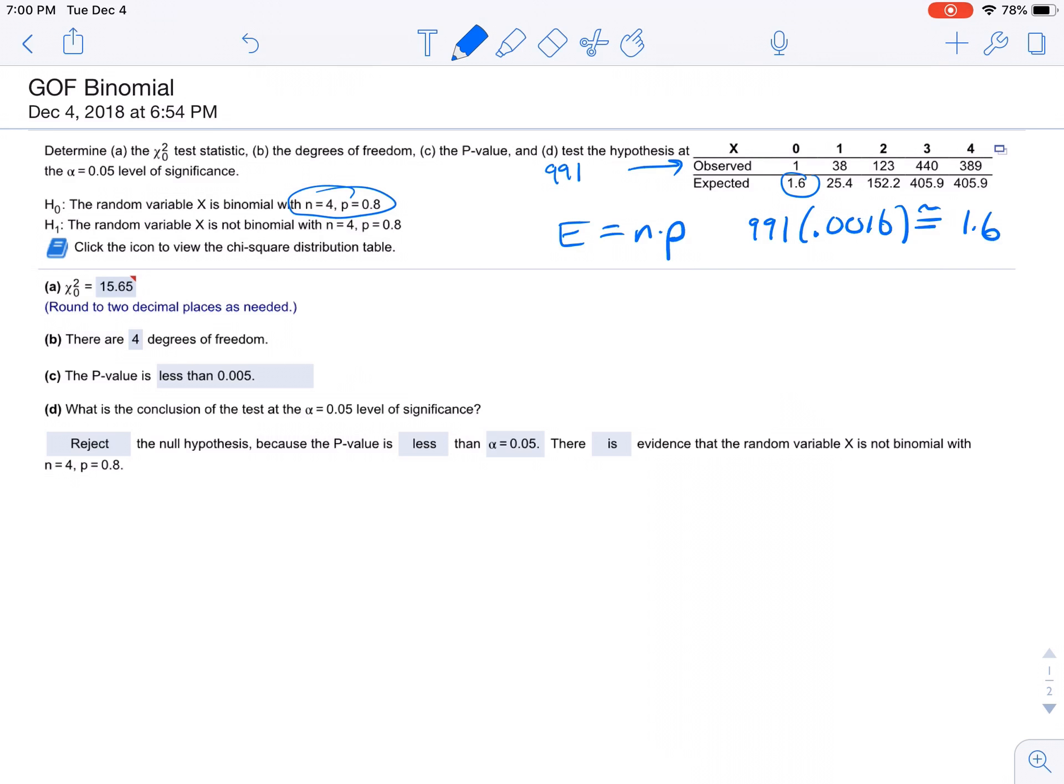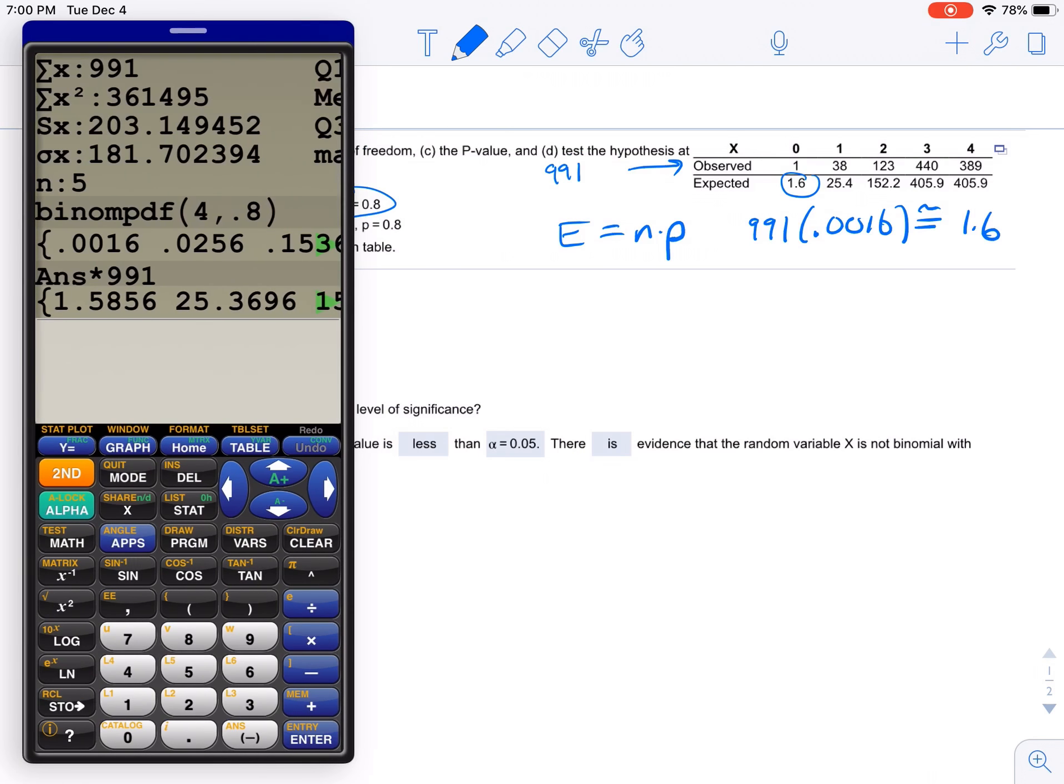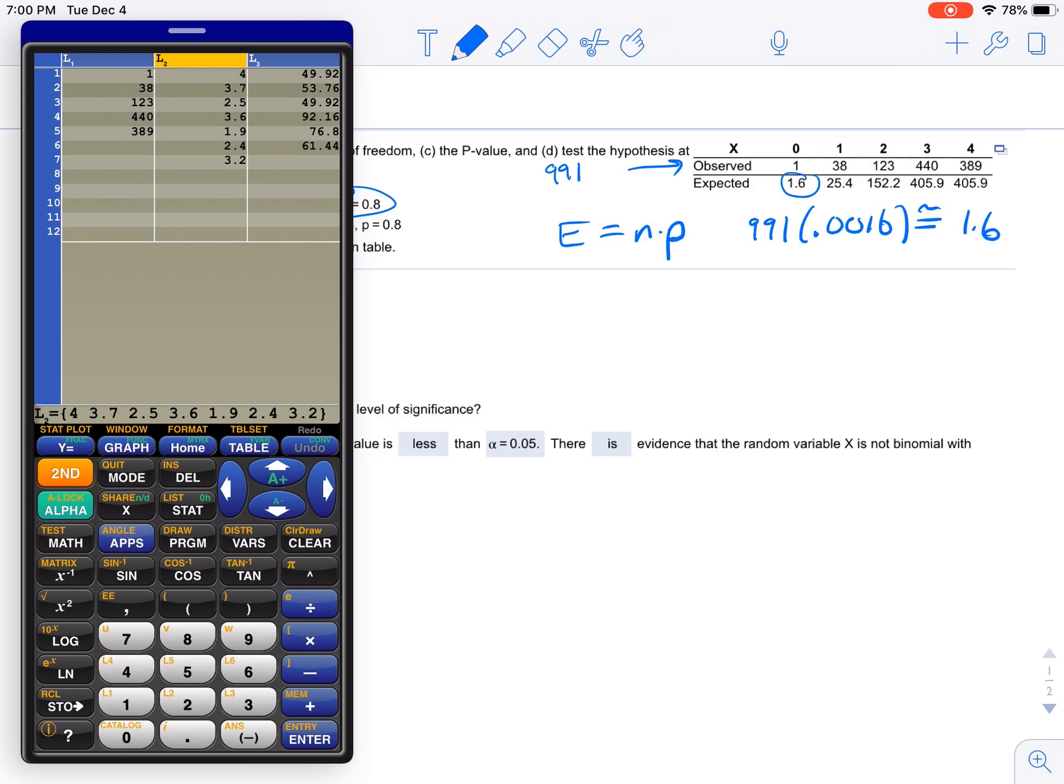All right, so we have the observed values and the expected values. So really, all we go to is stat. If we go to L2, and we clear all those values, and we just put 1.6, 25.4, 152.2, 405.9, 405.9.